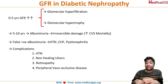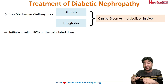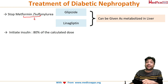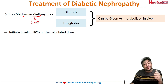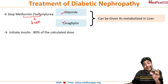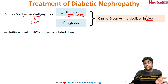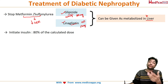For management of diabetic nephropathy, stop metformin and sulfonylurea as both decrease GFR further. Two safe oral drugs are glipizide and linagliptin — both are metabolized in the liver and do not affect GFR. Glipizide is given in 2 to 3 doses at 40 to 80 milligram per dose, whereas linagliptin is given as an OD dose at 10 milligram.